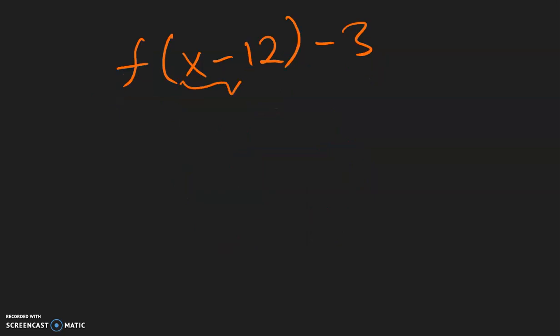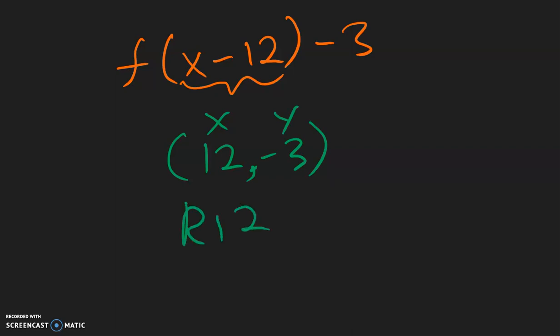For this example, we have a negative 12 on the inside, so change becomes positive 12. And the y coordinate is negative 3, but outside does not change, so still a negative 3. So positive x went to the right 12 units, and negative y went down 3 units.